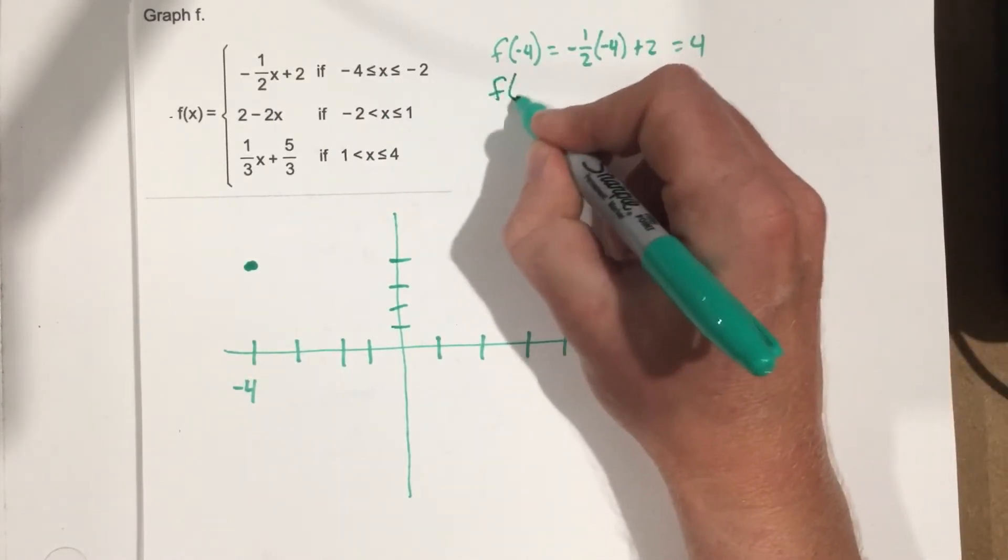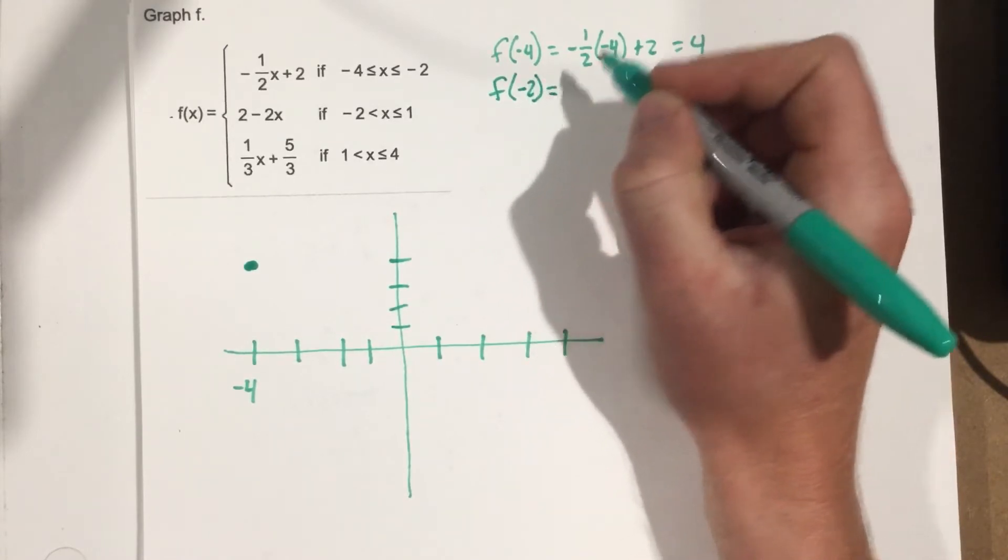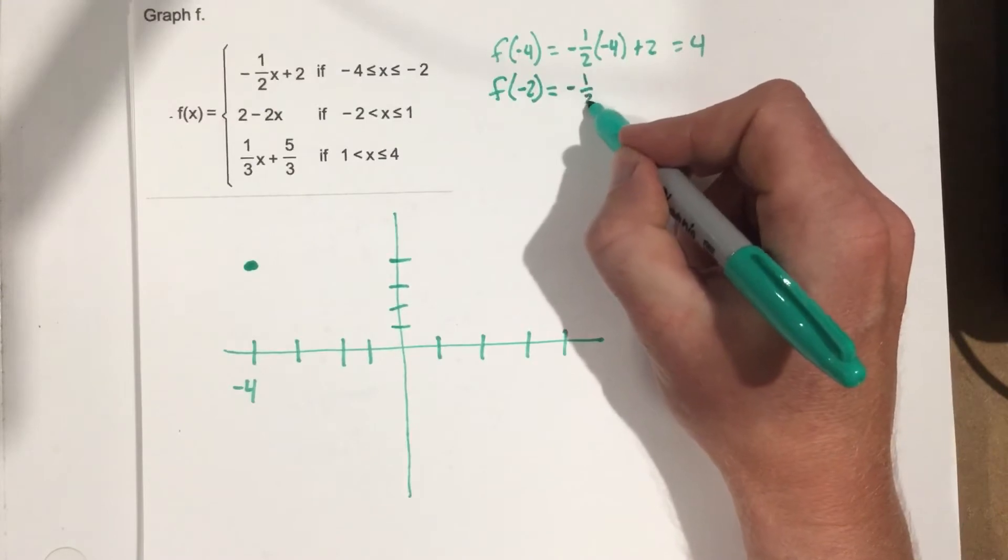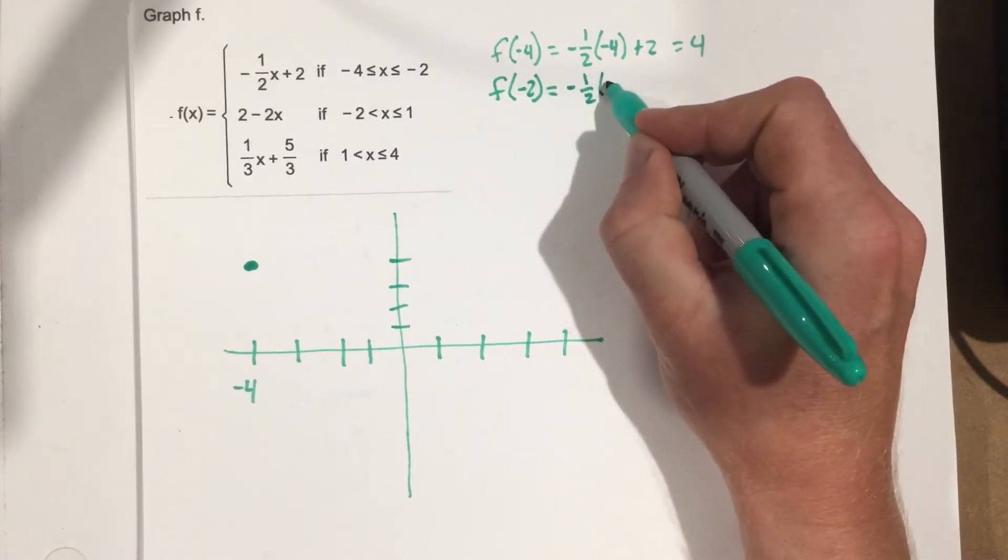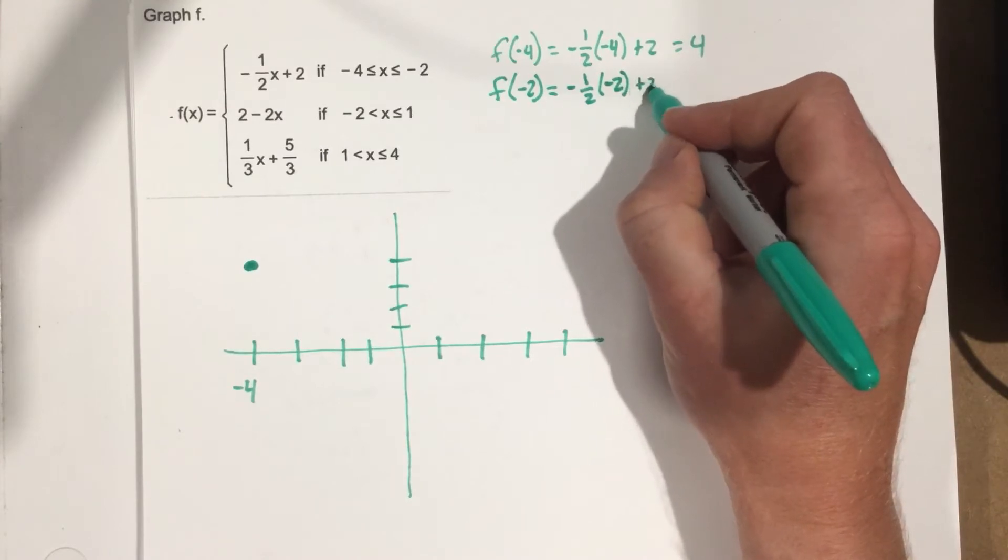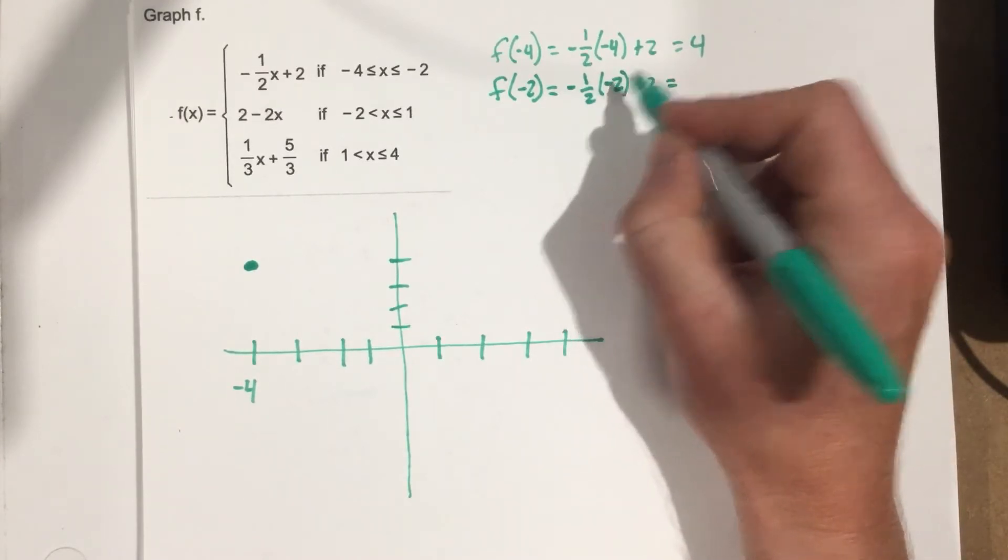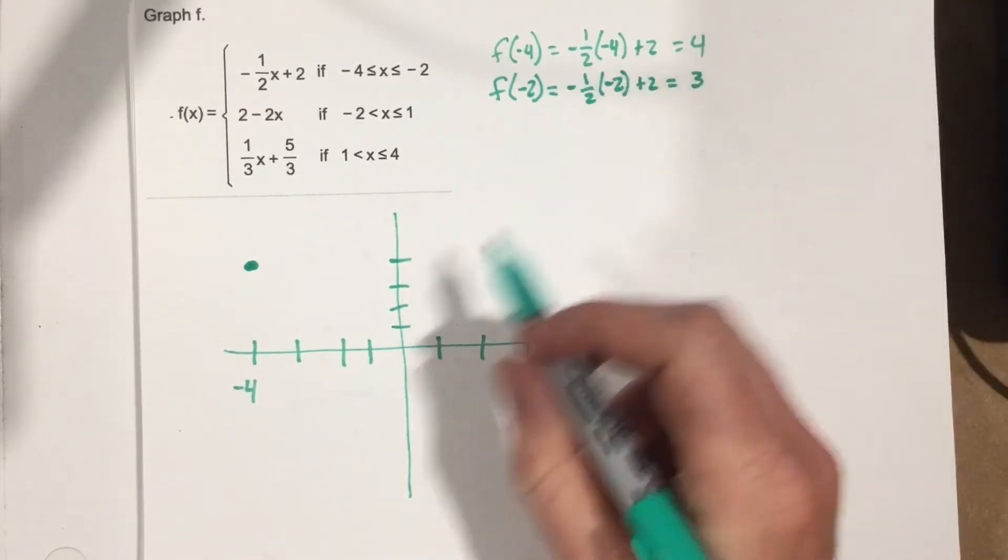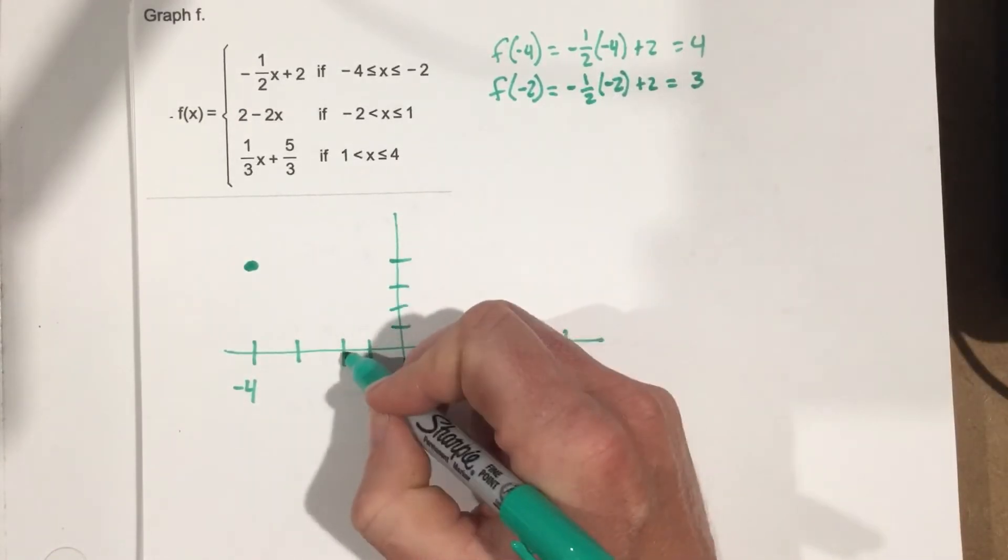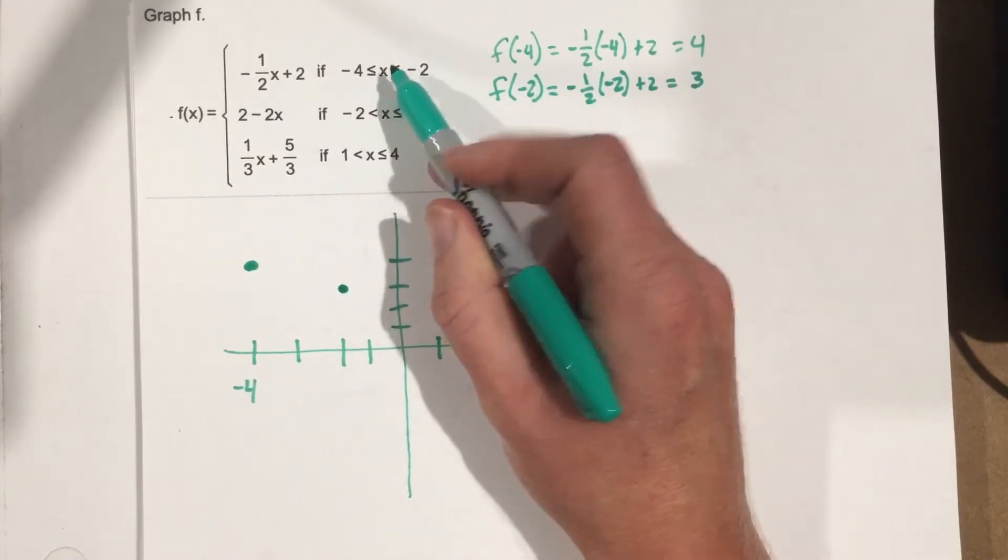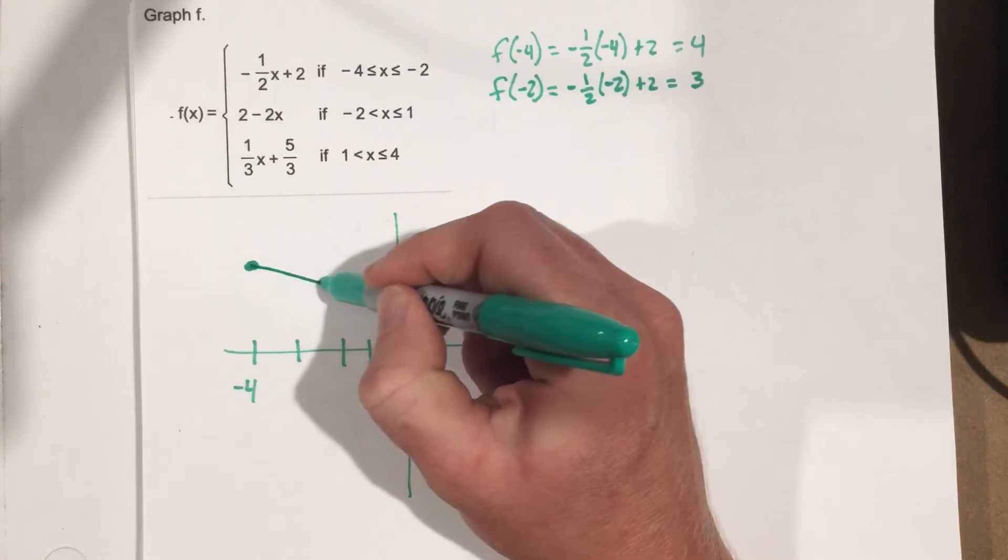Let's do f of negative 2. Now this is f of negative 2 for the top function. You've got to keep that in mind. So this is negative 1 half, negative 2, plus 2. Well, this will give you 1, so this gives you 3. So 1 plus 2 is 3. So negative 2, 3. Negative 2, 3 is right here. It's also closed because of the equal sign. We can connect those two points.